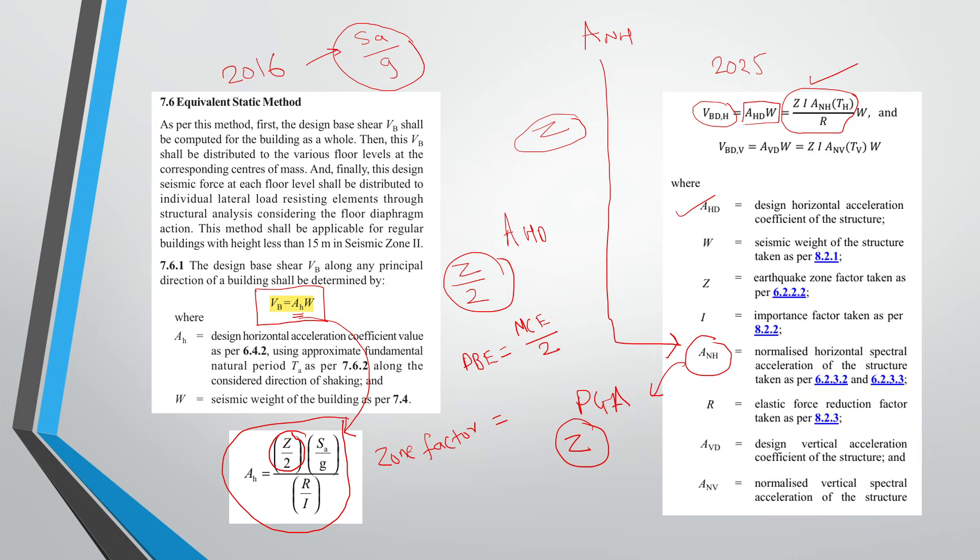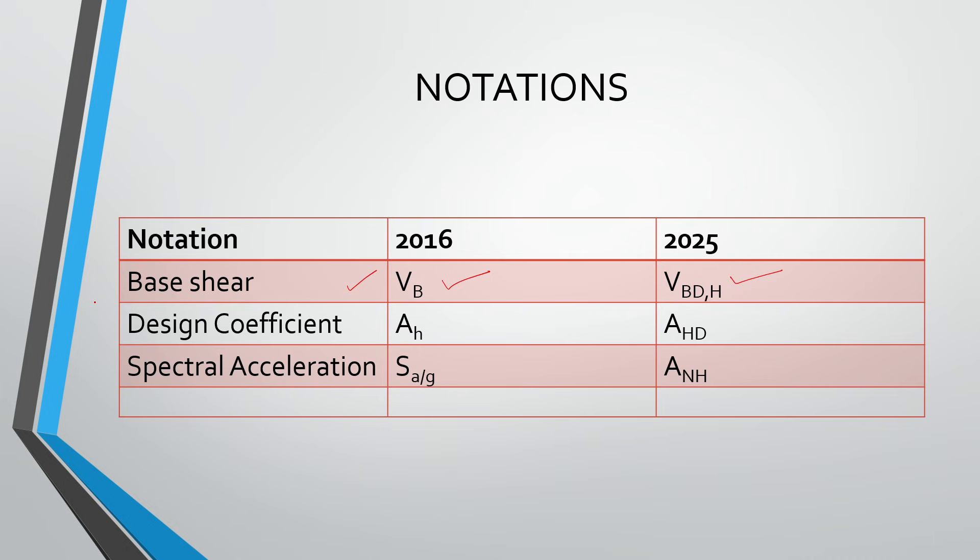So that is the difference: SA by G versus ANH, and previously Z by 2, now it is Z. That is the basic difference. Some of the things you can see here are that vertical and horizontal both components are there. The process for calculation of the seismic weight is the same.